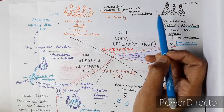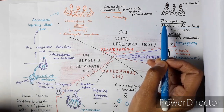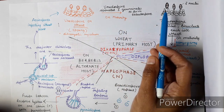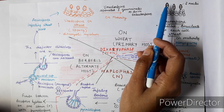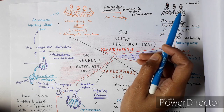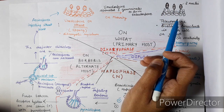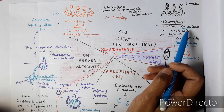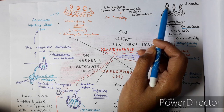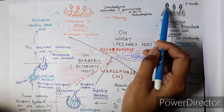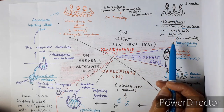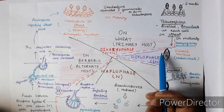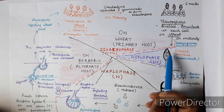After maturity, uredospores get converted into teleutospores. The main difference is their appearance. Teleutospores are bi-celled structures — two cells — and each cell contains two nuclei which later fuse together. Teleutospores are black in color, bi-celled, and binucleate. On maturity, karyogamy — the fusion of nuclei — takes place in the teleutospore, and both nuclei fuse to form a diploid nucleus.